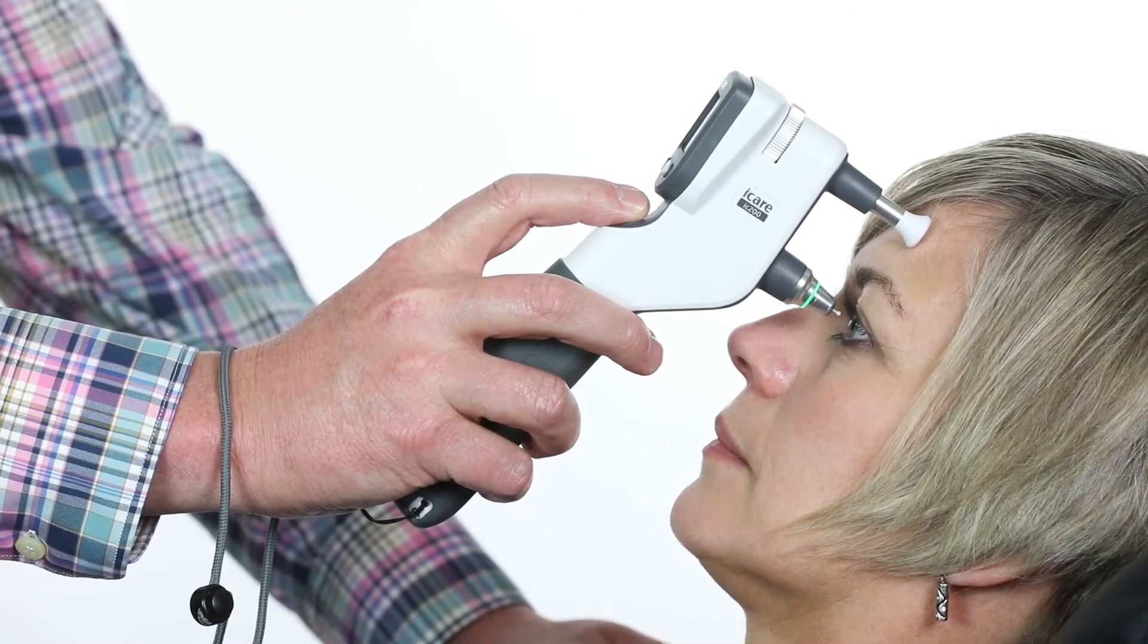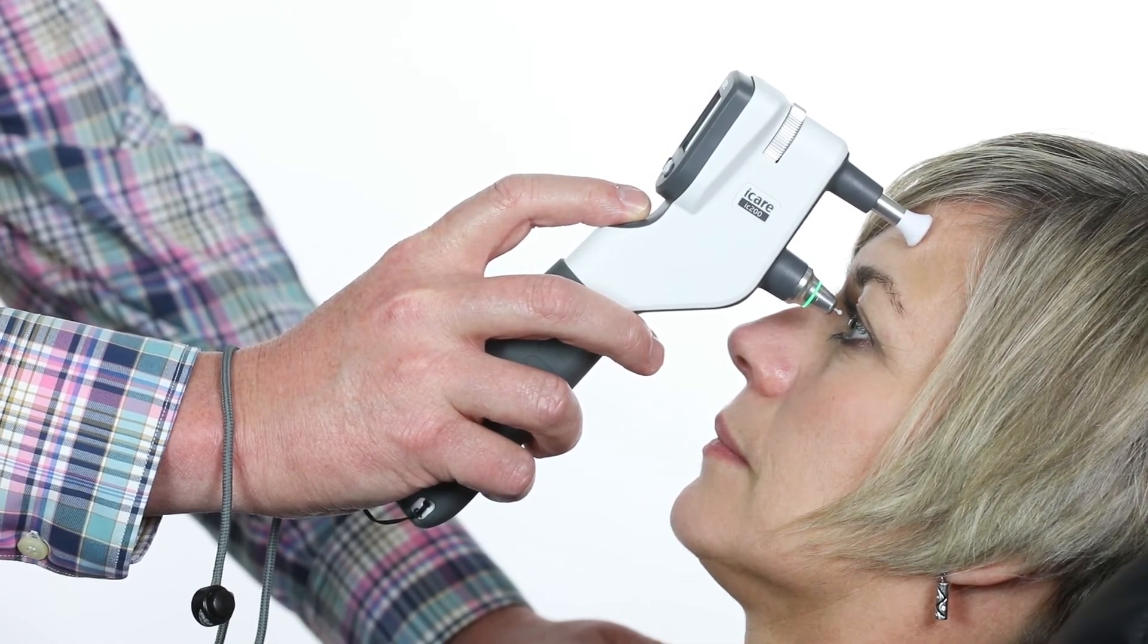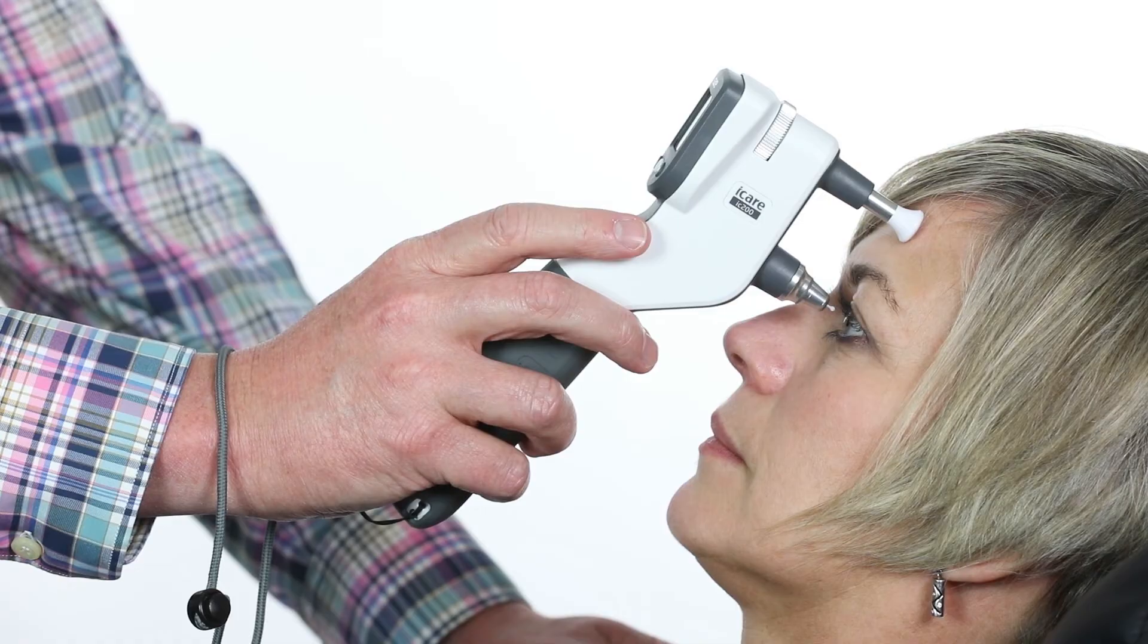When taking measurements on an angle, position patient appropriately, aim the probe in the center of the eye, and press and hold the measure button until you hear a long beep.